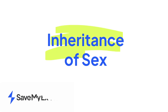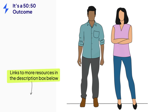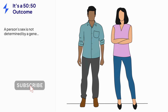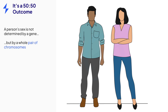This video is on the topic of the inheritance of sex. In most animal populations, there is generally a 50-50 split of males and females. It is important to note that there isn't a single gene for which sex somebody is — there isn't a male gene or a female gene. There are lots of differences between the sexes that need more than one gene to code for them. Instead, a whole pair of chromosomes is needed.